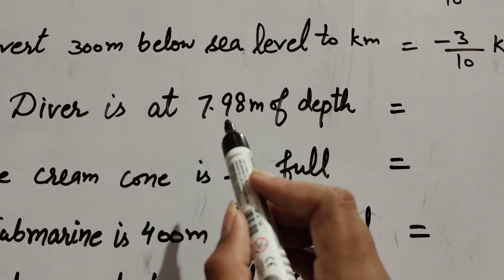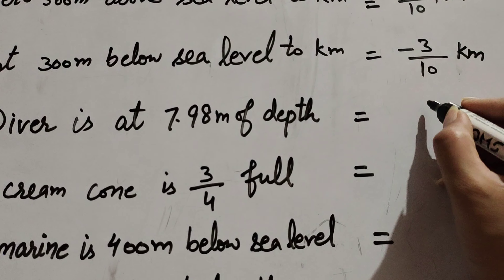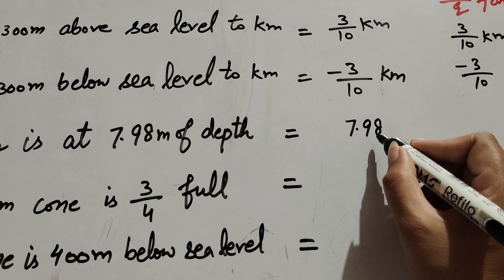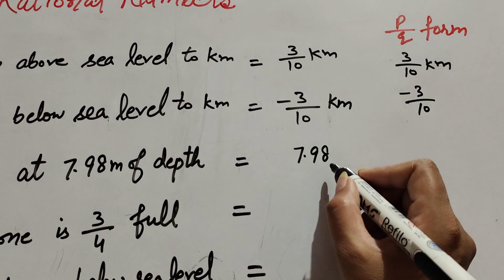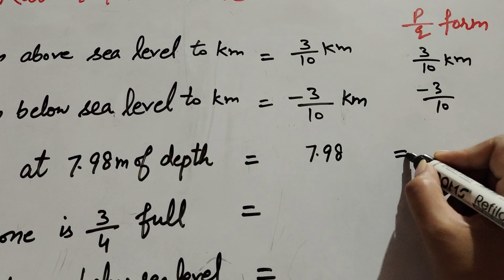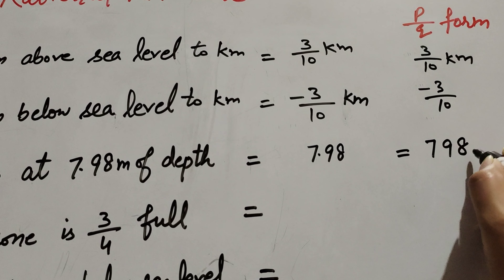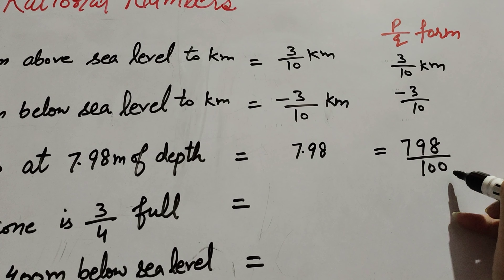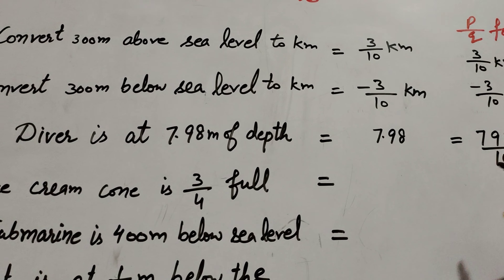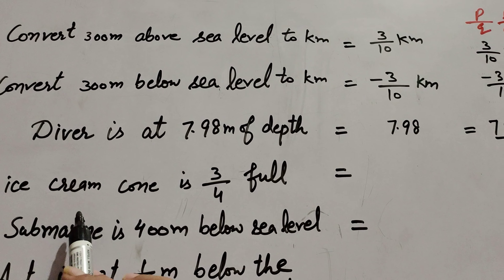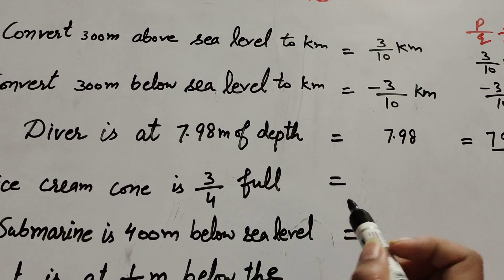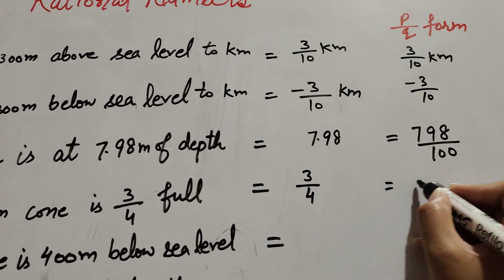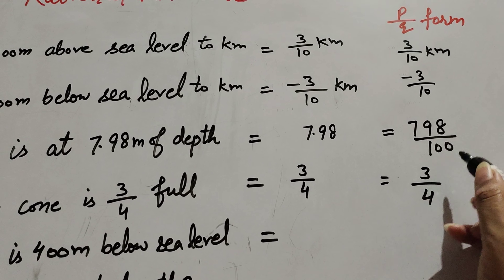A diver is at 7.98 meters of depth. 7.98 is a decimal number, so we also write this number in p over q form — it equals 3 over 4. Three over 4 is a fraction, so it is also a p over q form.